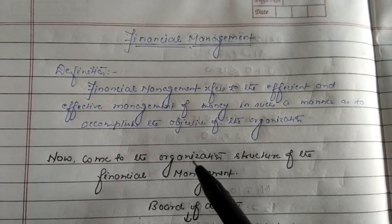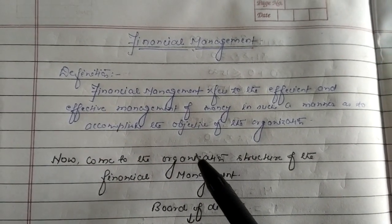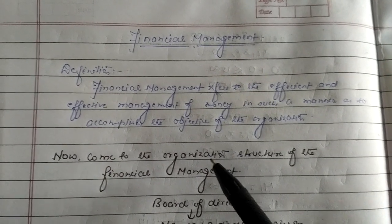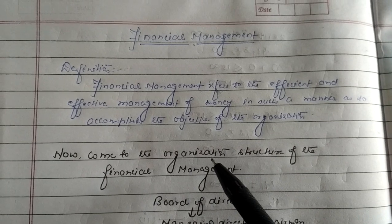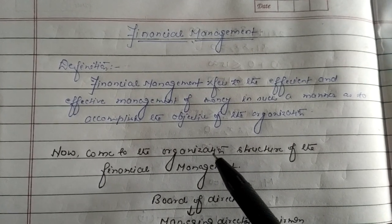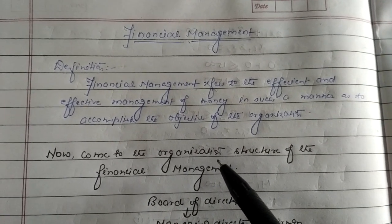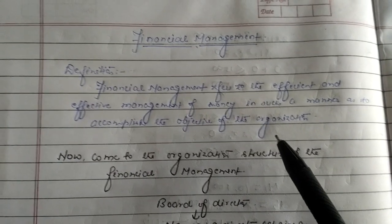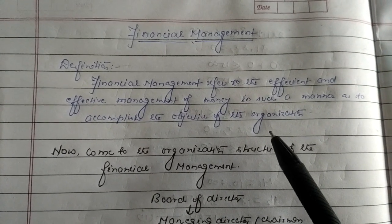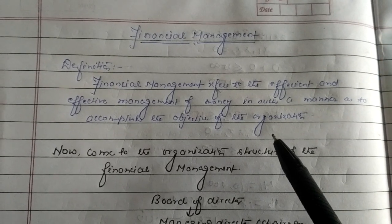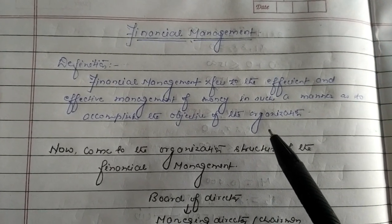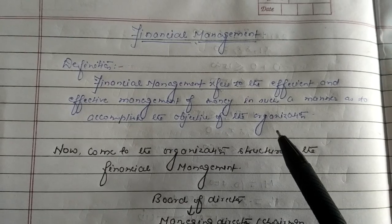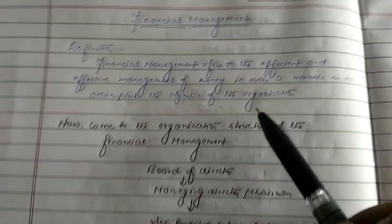Now come to the definition of financial management. As its name indicates, financial management refers to the efficient and effective management of money in such a manner as to accomplish the objectives of the organization. Financial management is basically associated with the procurement and distribution of money inside the organization in a profitable manner.